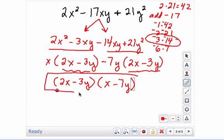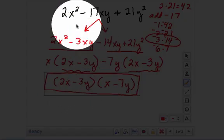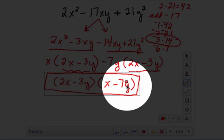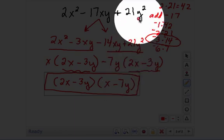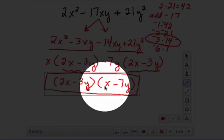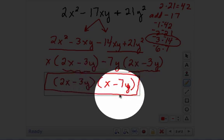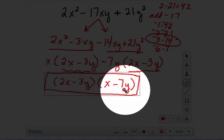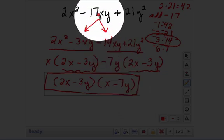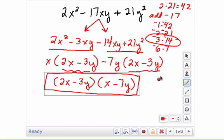Again, you can go ahead and check it. 2x times x is 2x squared. Negative 3y times negative 7y is positive 21y squared. These middle terms multiply to give you negative 3xy, and then you multiply the last and it gives you negative 14xy. Negative 14 and negative 3 adds to give you negative 17. So you've checked and made sure it works.